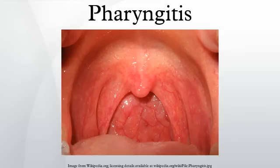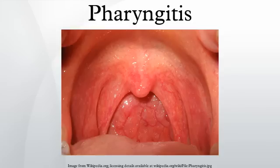Streptococcal pharyngitis, or strep throat, is caused by Group A beta-hemolytic Streptococcus. It is the most common bacterial cause of pharyngitis. Common symptoms include fever, sore throat, and large lymph nodes. It is a contagious infection spread by close contact with an infected individual. A definitive diagnosis is made based on the results of a throat culture. Antibiotics are useful to both prevent complications and speed recovery.